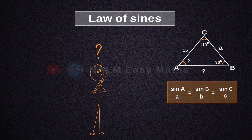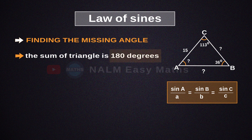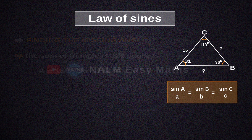How do we find the missing angle? First, we have to find angle A. We know that the sum of all angles in a triangle is 180 degrees. So from 180, we subtract 36 and 113, which gives us 31. Let's assume that is angle A. Place the value of angle A in the triangle.